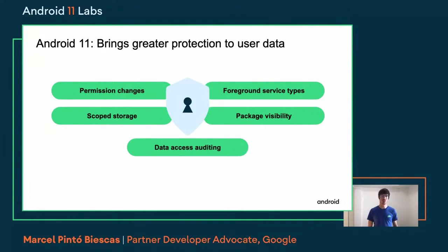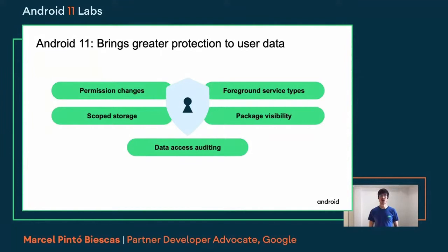On top of that, we are also enabling a data access auditing framework that will allow developers to know where their code is accessing APIs that either require permissions or access private data. We know that all our apps have third-party code. Sometimes our code grows so much that we don't know where an API call is being made. This API tries to help you find that out. We will not be covering this part today — we will focus on the privacy changes.